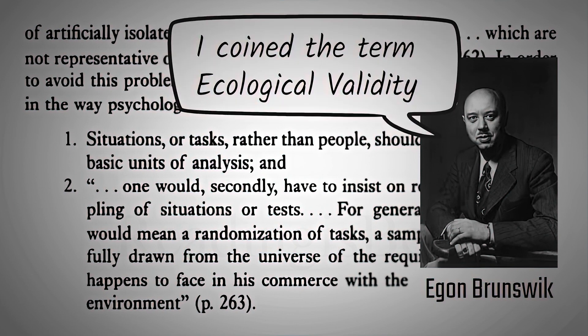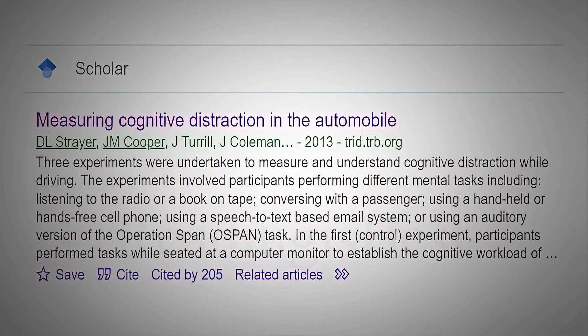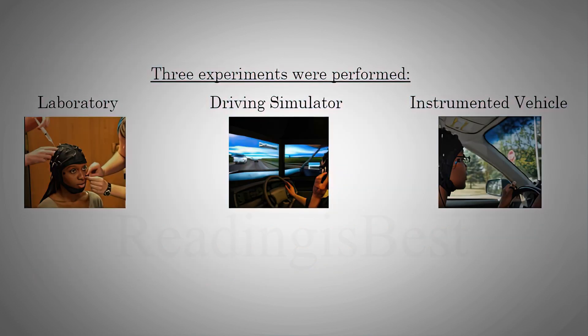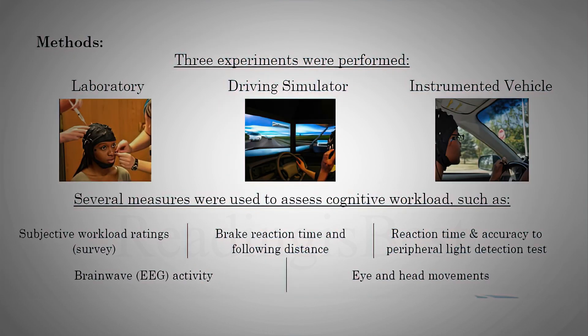Let's take an example from the research titled 'Measuring Cognitive Distraction in the Automobile' by David Alstraer and his team at Utah University. This experiment was performed in three different settings: laboratory, driving simulator, and instrumented vehicle.